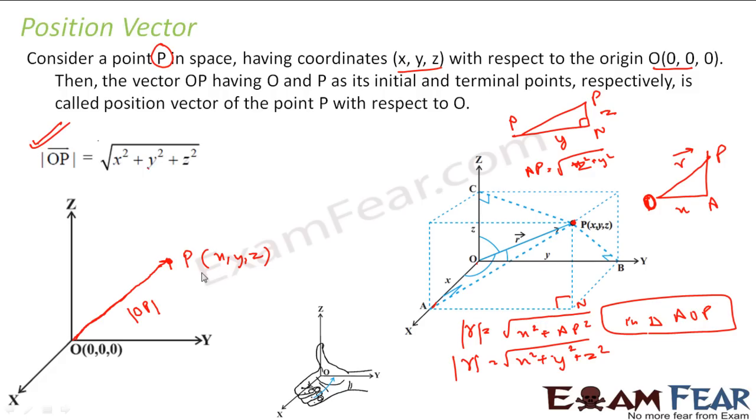You have some position vector P with some point x, y, z. Then the distance of that point from origin O is root of x square plus y square plus z square. How we got this? By applying Pythagoras theorem twice.